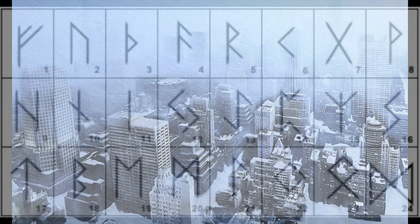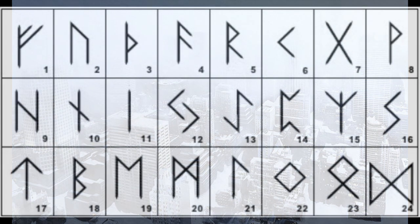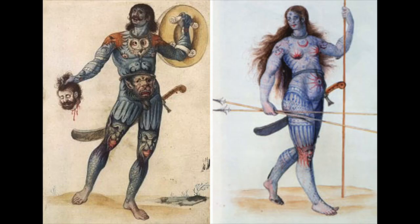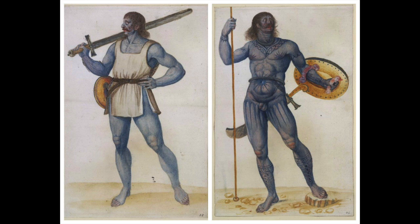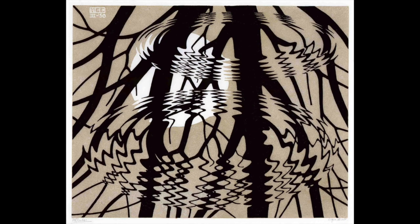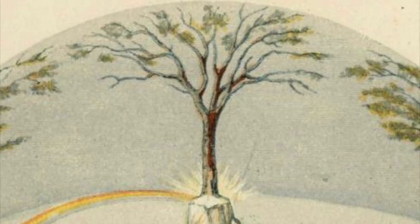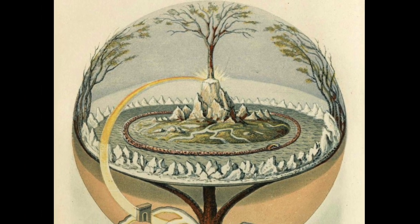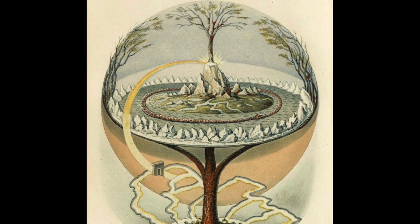But let us remember the original source of the runes, not as a written phonic language, but in the mythology of their own creators, the Indo-Europeans. According to them, the runes were first seen by Odin in the reflection of the moon in a puddle below him as he hung upside down from Yggdrasil, the world tree of Druid mythology.